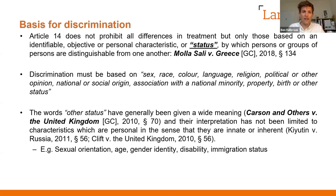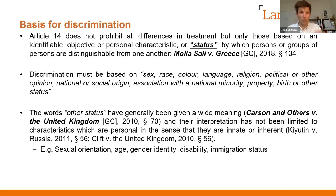Article 14 doesn't prohibit all differences in treatment, only those based on objective, identifiable personal characteristics or status. Some grounds are listed in the convention, but there is also the category of 'other status,' which has been given a quite wide meaning by the court. Interpretation hasn't been limited to personal characteristics — for example, sexual orientation, age, disability are personal characteristics, but immigration status is not, yet it would fall within 'other status' for the purposes of Article 14.